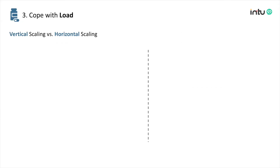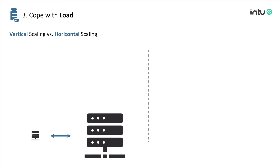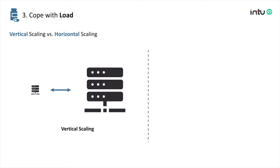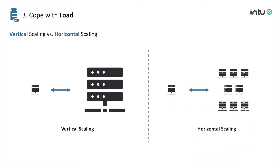Regarding resources, you can either vertically or horizontally scale your system. Vertically scaling means replacing with higher-end machines, which can become very expensive. Also, there's a limit to the extent of scaling you can do on a single machine. On the other hand, horizontally scaling means distributing the load across multiple smaller machines. This might increase the complexity of your system if it's not already built around a shared-nothing architecture. The trend is to horizontally scale your system, but it comes with complexity.